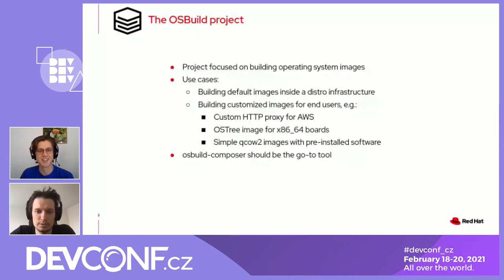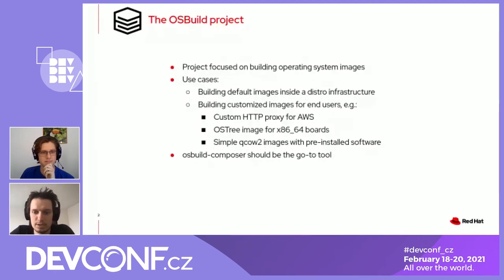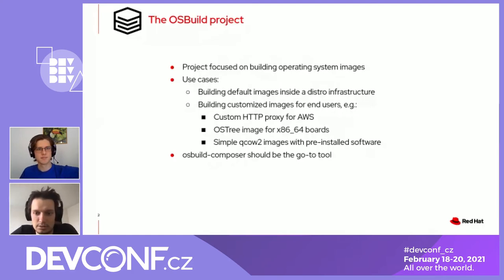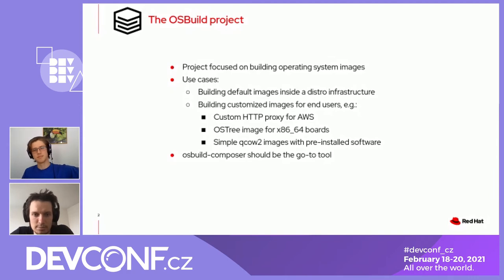For example, if you want to create default images for your distribution, or if you want to create a customized image that contains an HTTP proxy for Amazon, or just a simple QCOW image with some pre-installed software, OS Build Composer should be the right tool to do this.